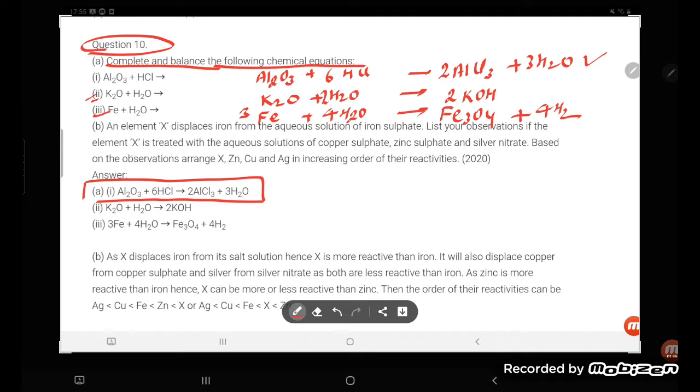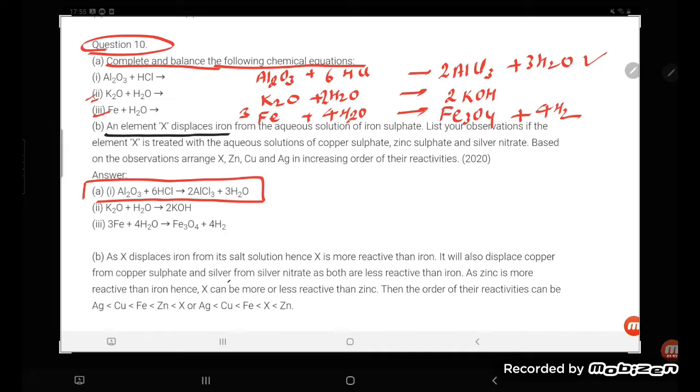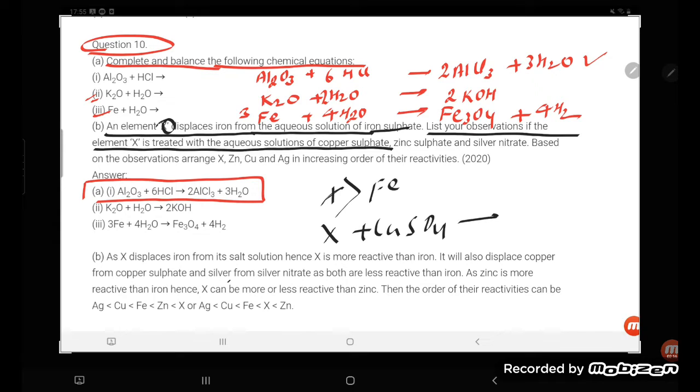Okay, part B question. They are saying an element X displaces iron from the aqueous solution. So X will be more reactive than iron. List your observation if the element X is treated with the aqueous solution of copper sulfate.